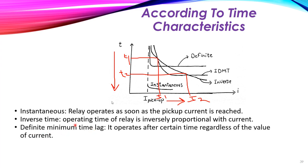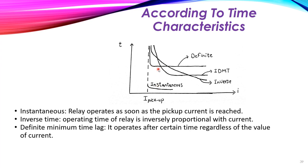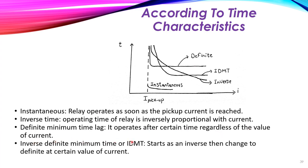The definite minimum time relay means that when the current exceeds the pickup value, the relay operates after a fixed time regardless of the value of the current — the time remains constant. The inverse definite minimum time (IDMT) type starts with an inverse characteristic, then at a certain current value it becomes definite — so it starts as inverse and then changes to definite at a certain current level.